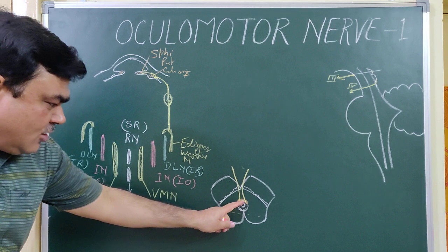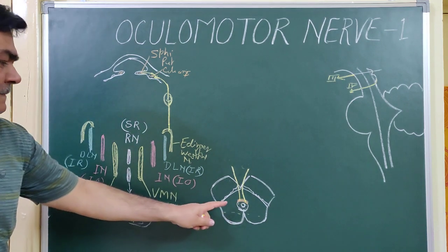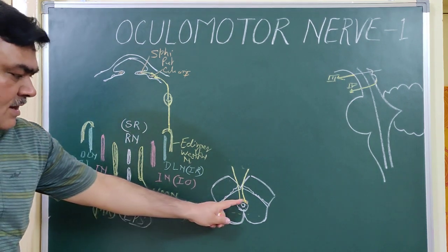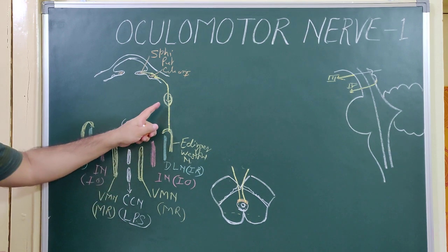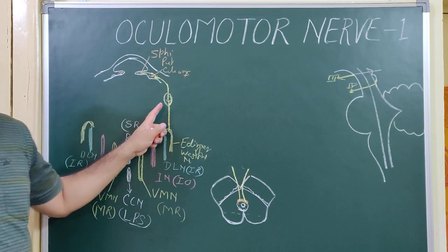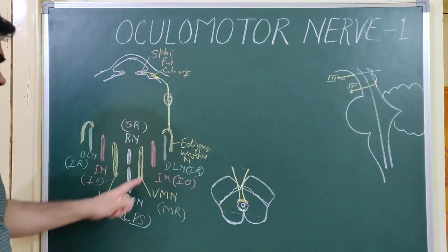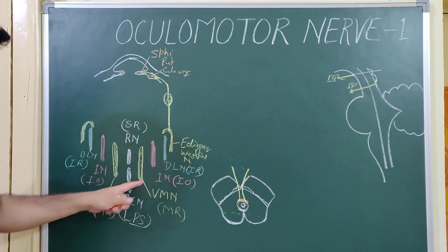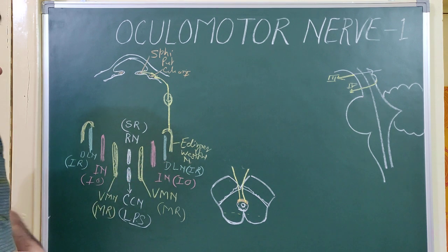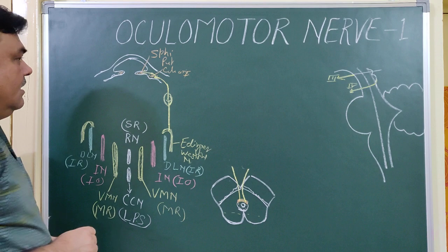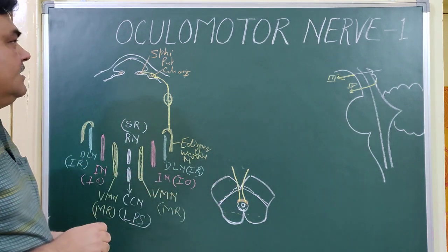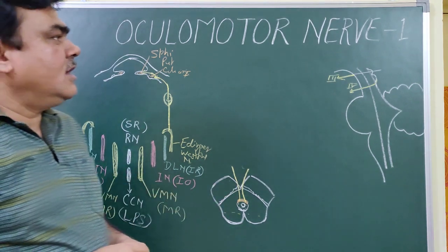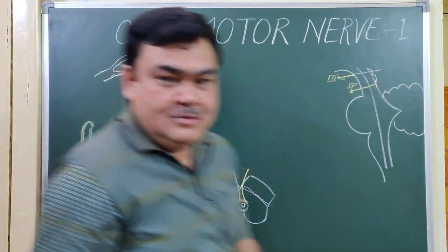In the oculomotor nuclear complex, there are parasympathetic fibers, that is general visceral efferent fibers, and somatic efferent fibers. This is all about the oculomotor nerve, part one. Thank you.